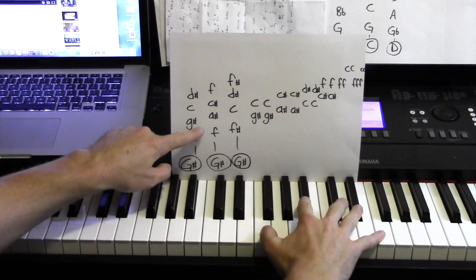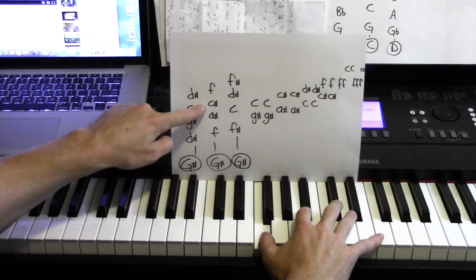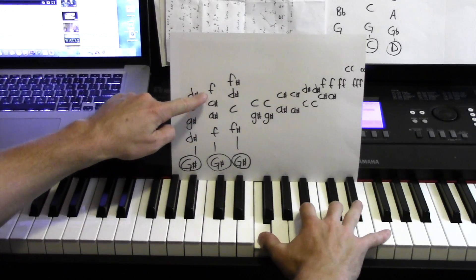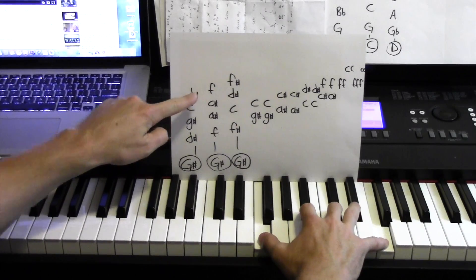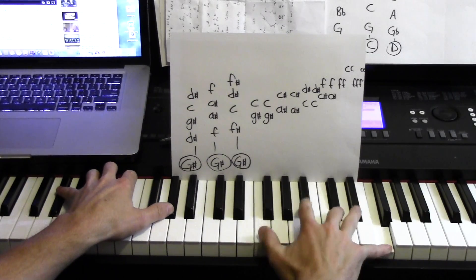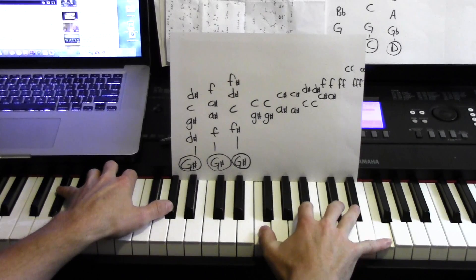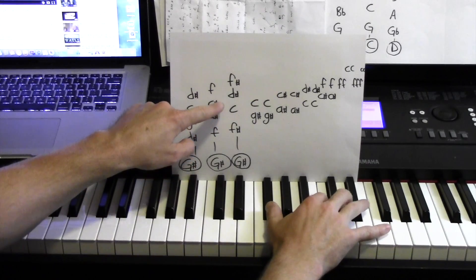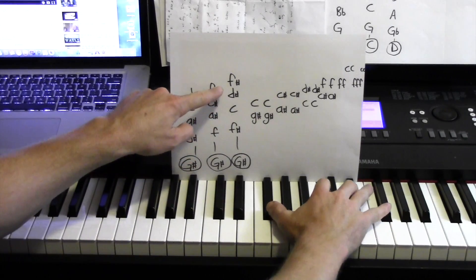Then I go to this next group: F, A sharp, C sharp, F. And then same deal. Then F sharp, C, D sharp, F sharp.